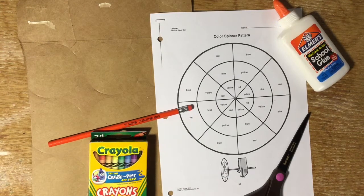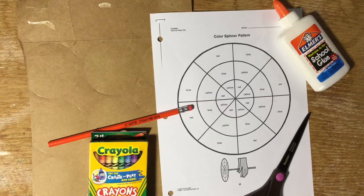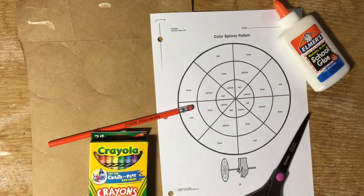Hello amazing artists, it's Miss Leatherwood here. Today we are going to learn how primary colors work together to make secondary colors by using a color spinner.